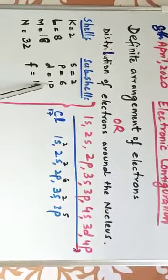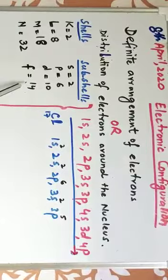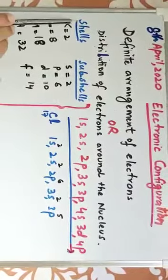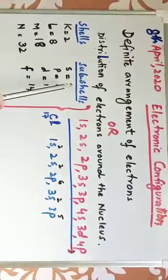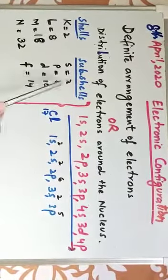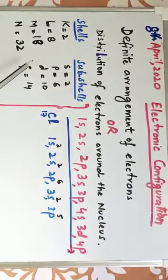D holds 10 electrons and F 14 electrons. So we can write electronic configuration in terms of shells or in terms of subshells. Both methods, both ways I can teach you today.